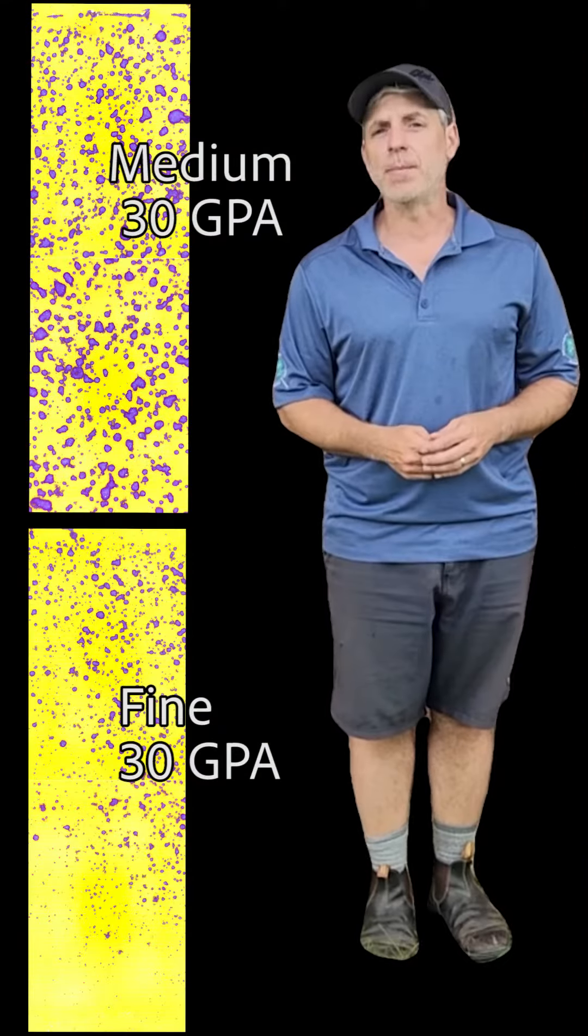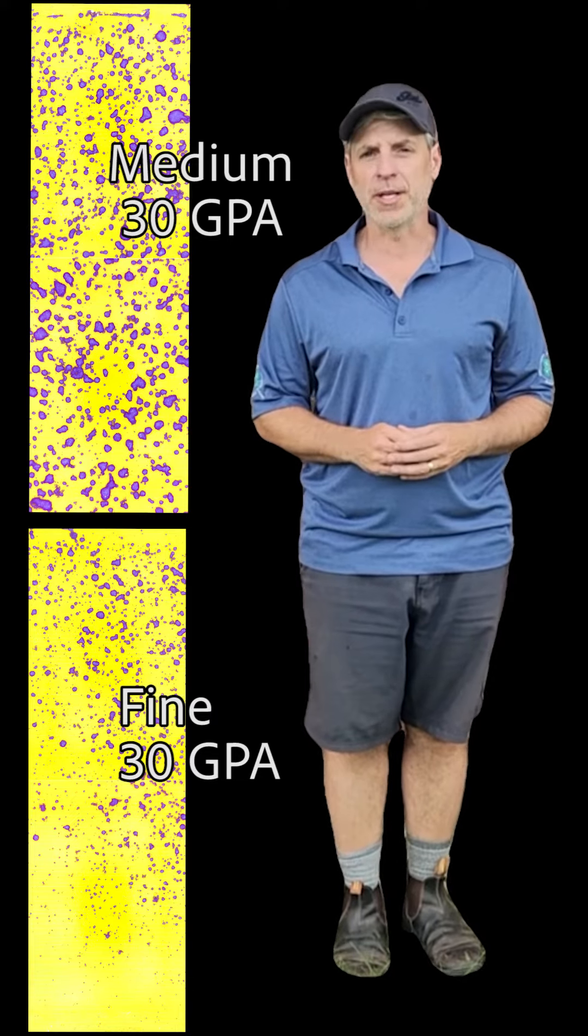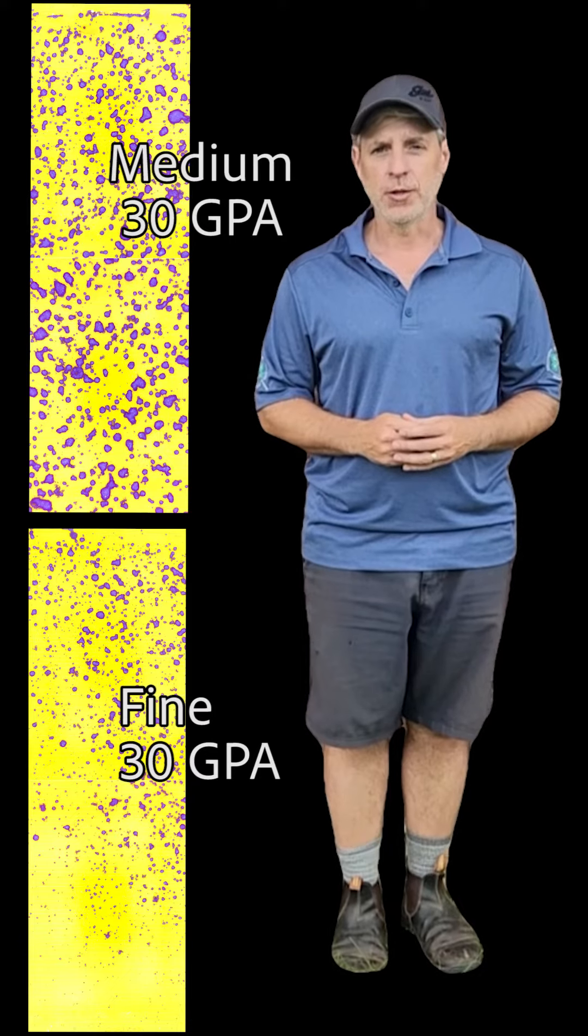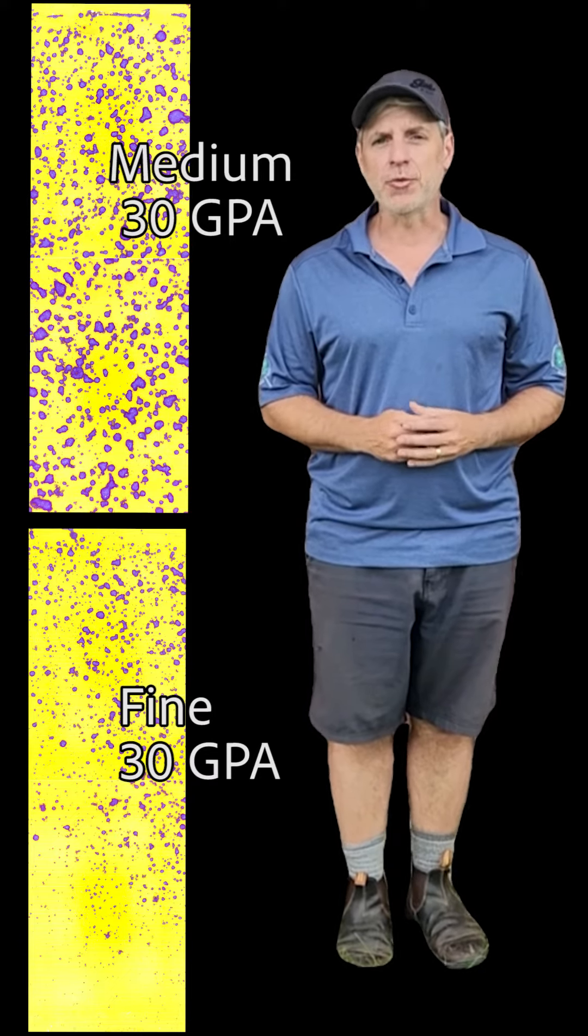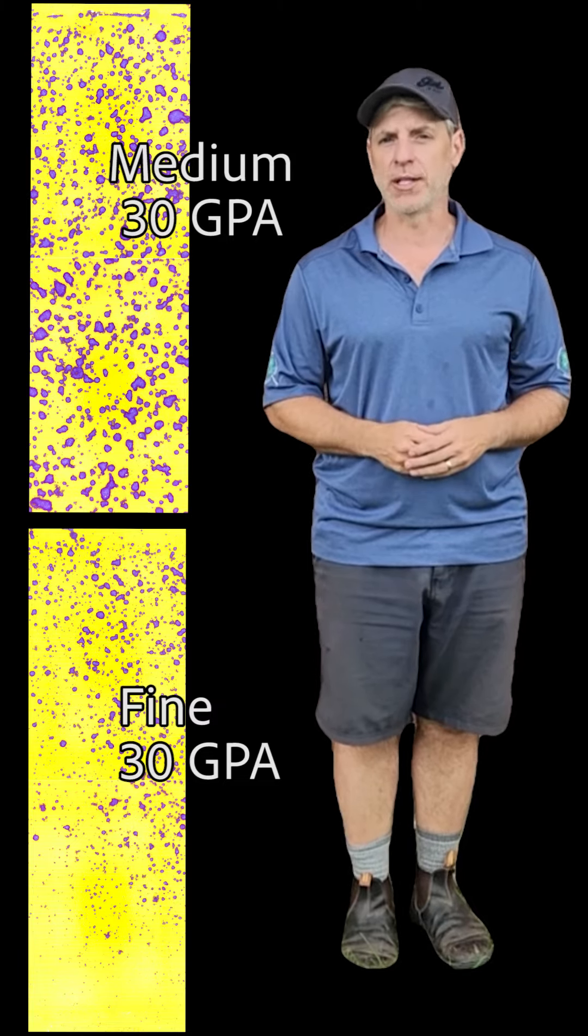In the end, a medium droplet size produced from a conventional flat fan nozzle moves more predictably and creates less drift than fines from a hollow cone nozzle. Used responsibly, a medium droplet size strikes a great balance between coverage and drift in broadleaf crops.